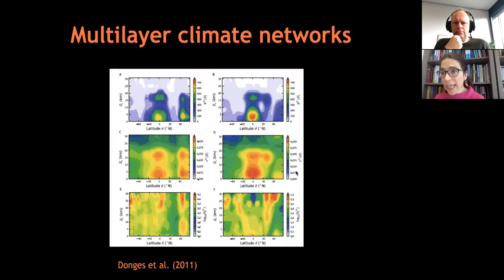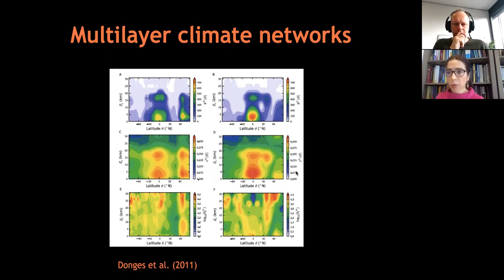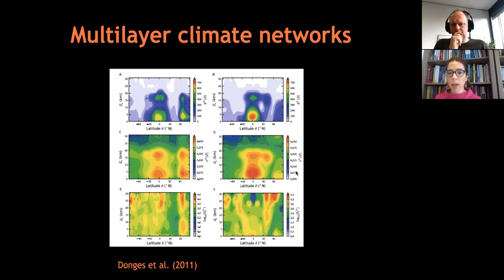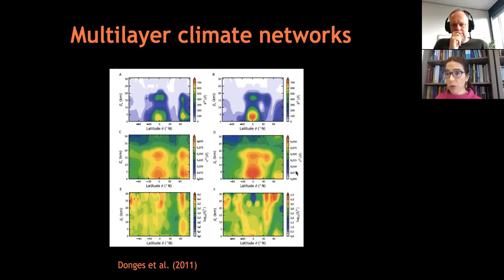Also in climate, there has been increasing interest in climate networks. One can build, from correlation or mutual information, multi-layer networks in which one has the geopotential at different altitudes that characterize the different layers of the structure.